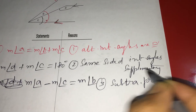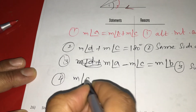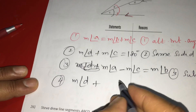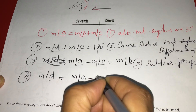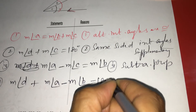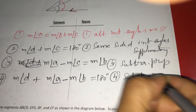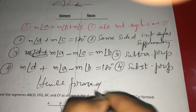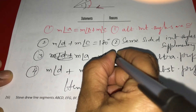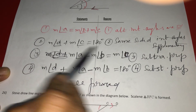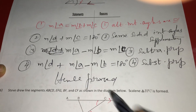Then, fourth: measure of angle D plus, instead of measure of C, we can write measure of A minus measure of B, that is equal to 180 degrees. This is substitution property. So, this is what we want — that's what I have proved, hence proved. Only thing is, I have to note here: instead of measure of A minus measure of C, it should be measure of B minus measure of C. Then, I substituted for measure of C — this is measure of A minus B.